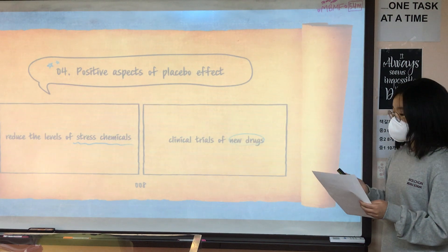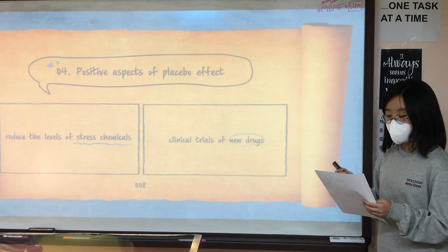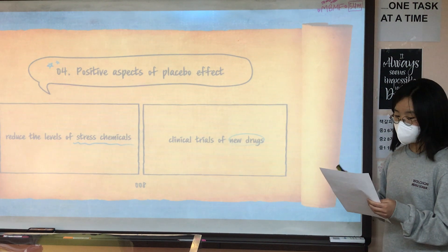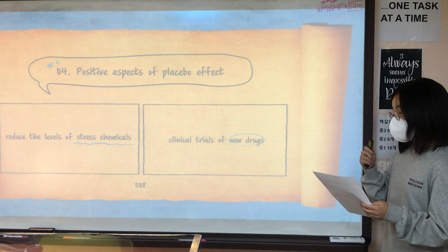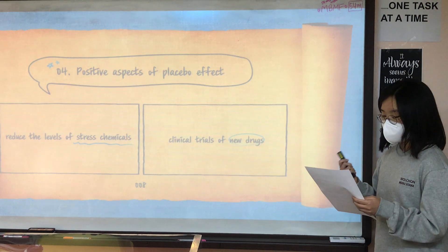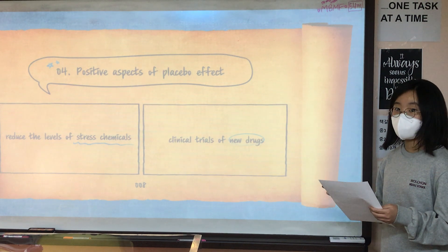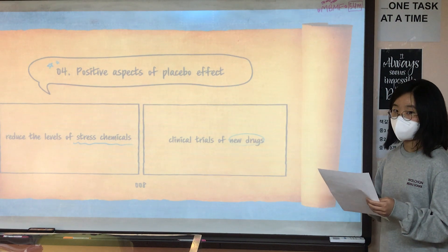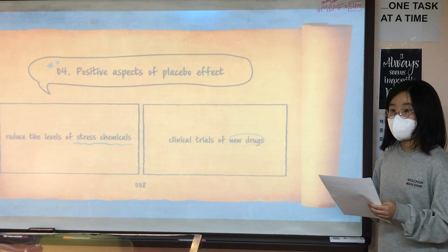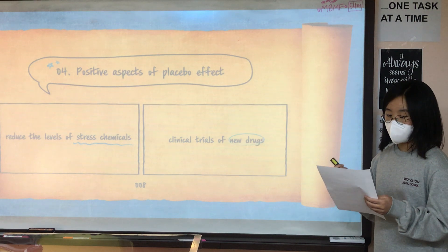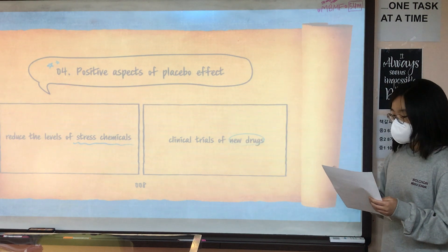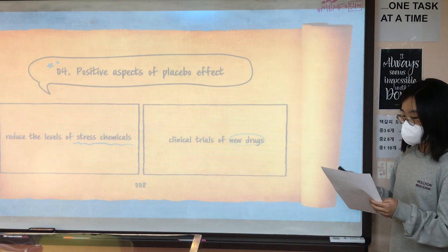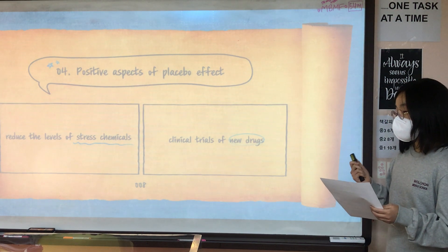Clinical trials are used to help test the effectiveness of new healthcare treatments, such as a medication or drug. For this experiment, one group of people takes the real medication, while the other group, called the control group, takes a placebo pill, which produces the placebo effect. Comparing the results of both groups shows whether the effects of the medication are effective or not.